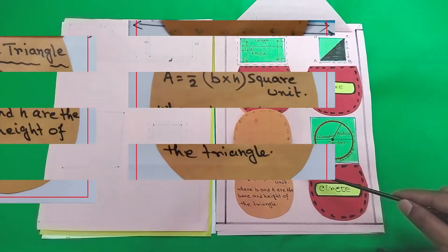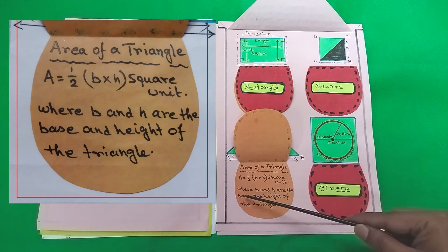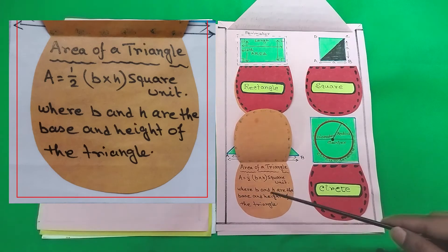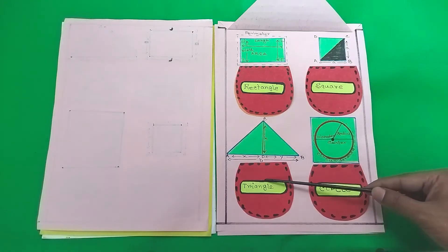So next up we have the area of a triangle. A equals half times B times H square units, where B and H are the base and height of the triangle.